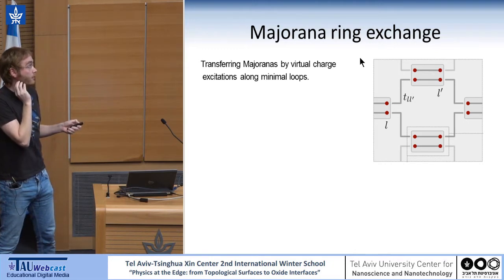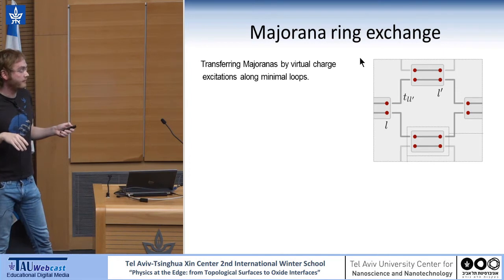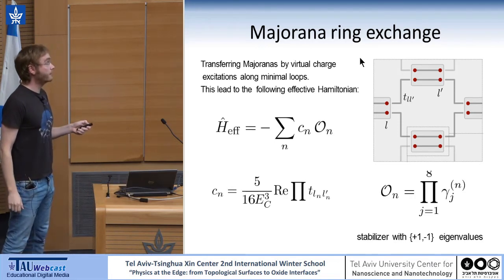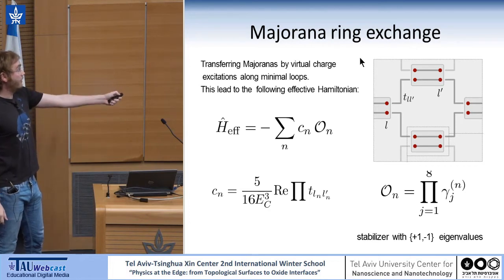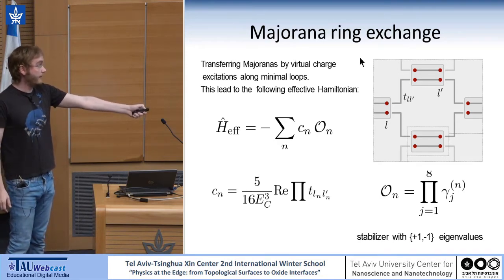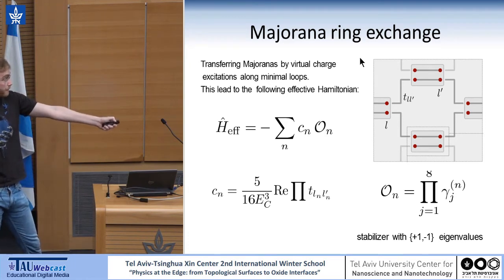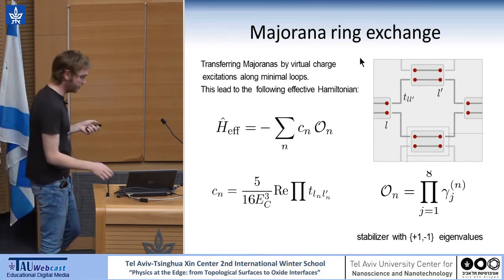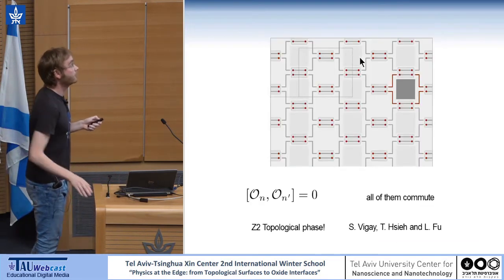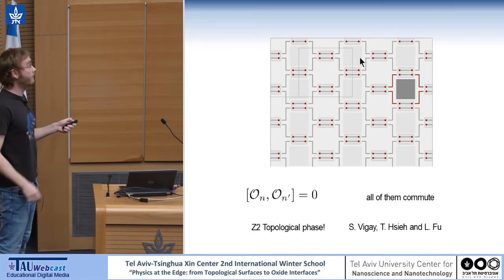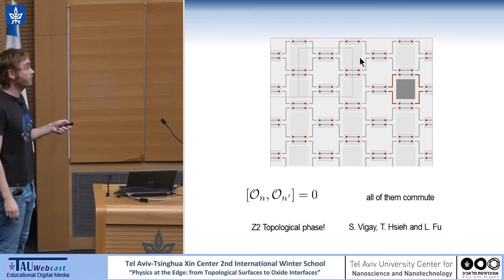The simplest process — a charge going from one island to the next and back — gives a trivial contribution to the effective Hamiltonian. The non-trivial contribution comes from a charge going around an entire loop and back. We obtain the following effective Hamiltonian where C depends on the charging energy and the tunneling coefficients t. This is our qubit — also called a stabilizer in surface code language, or a plaquette operator. It is a product of eight Majorana operators and has two distinct eigenvalues, plus one or minus one. If we look at the entire system, each one of these squares contains a plaquette or stabilizer operator, and all of them commute because they either share two Majorana operators or zero.